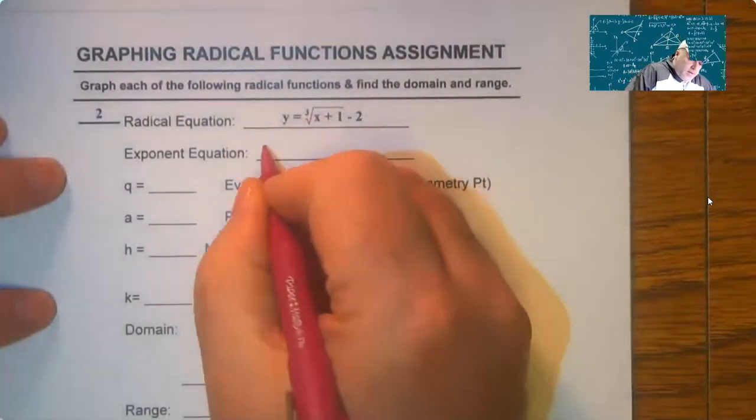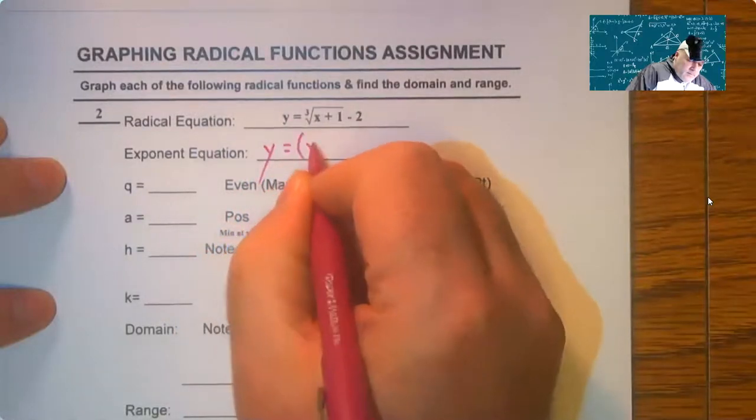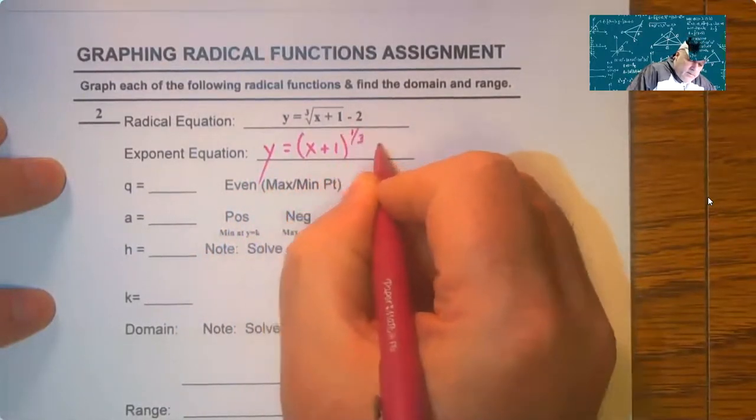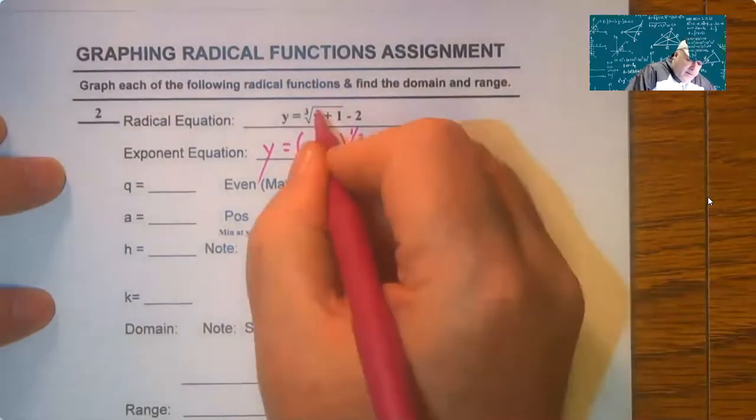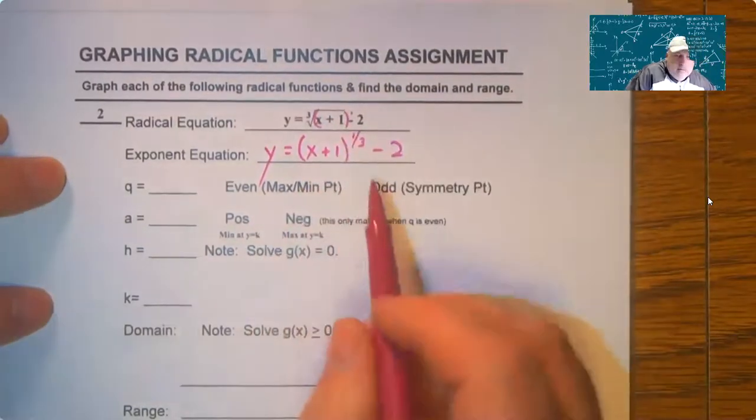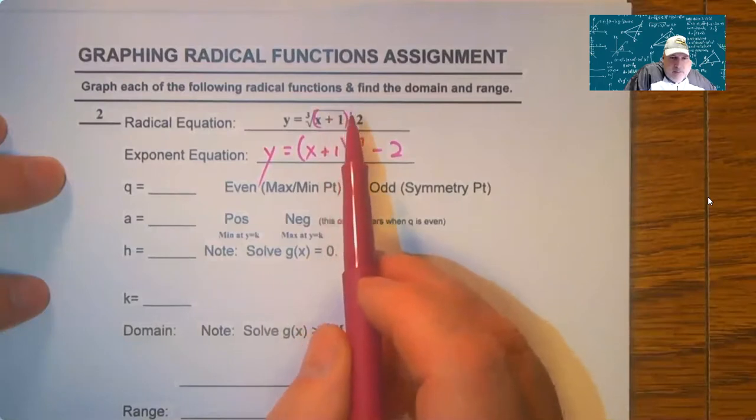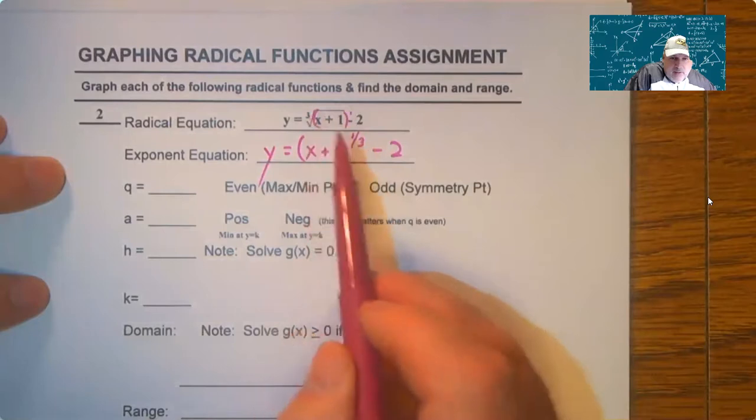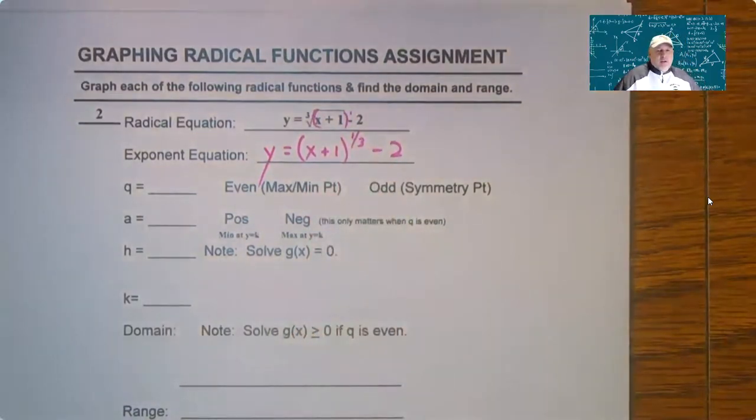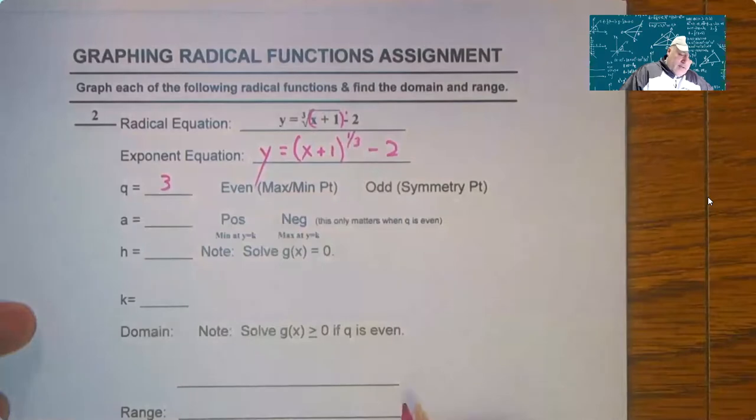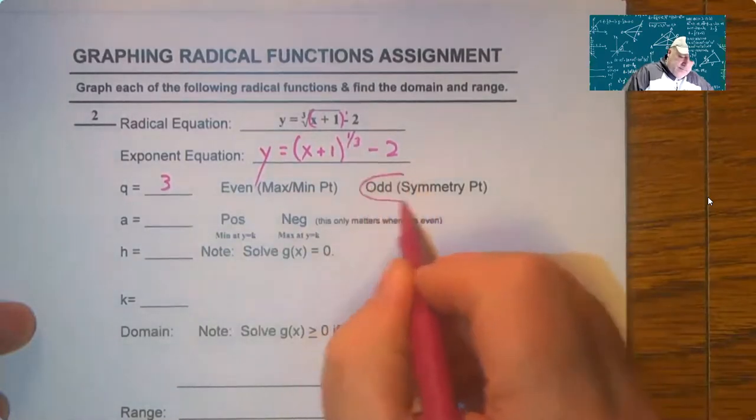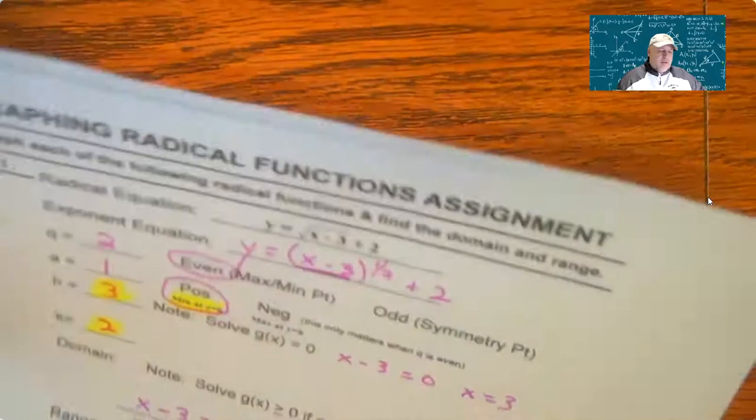So problem two. The first thing you want to do is write it. So how does this work? The power underneath here, whatever's underneath this power, is this one here. And then this little index here is the denominator. So that's a little tricky to get right a lot of times, but that's what you do. So this is odd.